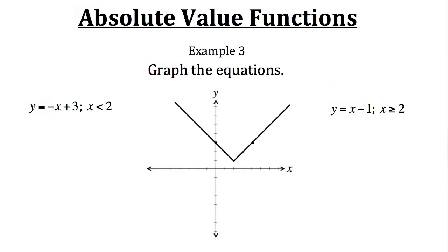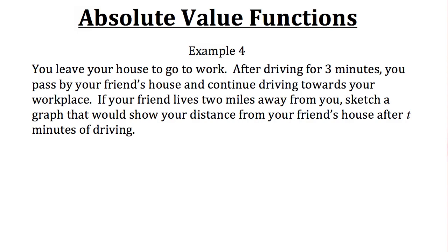Now let's look at how to graph an absolute value function representing a real-world situation. In example 4, you leave your house to go to work. After driving 3 minutes, you pass your friend's house and continue toward your workplace. Your friend lives 2 miles away, so you start off 2 miles away from your friend's house. After 3 minutes of driving, you pass by your friend's house, meaning you'll be 0 miles away. So if we graph that portion, we get the first half of the function.